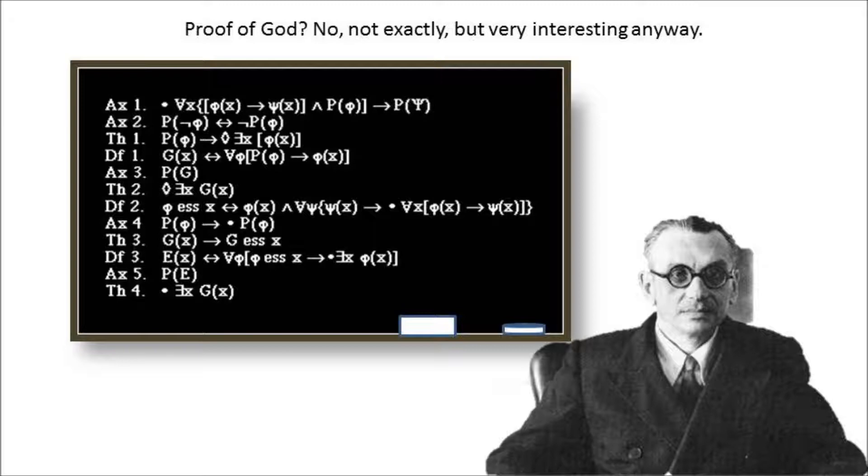Gödel used modal logic to derive a complicated logical argument which I've placed on the blackboard in this video. The details of the mathematics involved in Gödel's ontological proof are complicated, but in essence, the Austrian was arguing that by definition God is that for which no greater can be conceived.